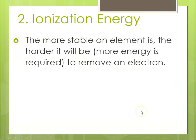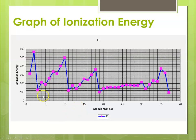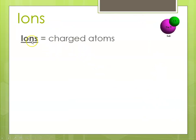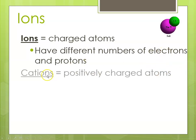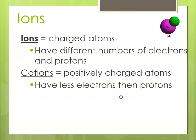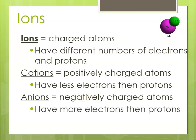Ionization energy increases up and across. The more stable an atom is, the harder it will be to remove an electron, and elements that become more stable by losing an electron have generally low ionization energies. This is what ionization energy looks like — hydrogen to helium, then you start a new row, it's low, then it increases across. Ions are charged atoms with different numbers of electrons and protons. Cations are positive — they have fewer electrons than protons because they've lost electrons. Anions are negative because they have more electrons than protons — they've gained electrons.